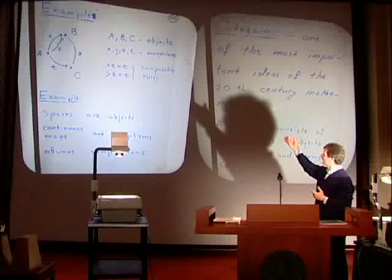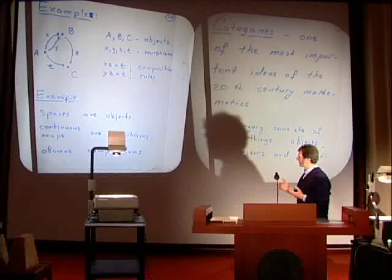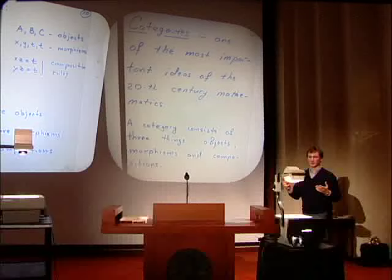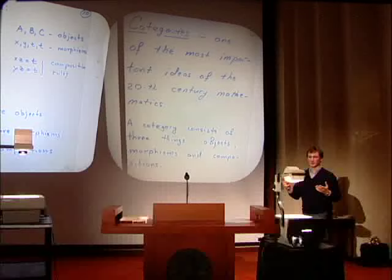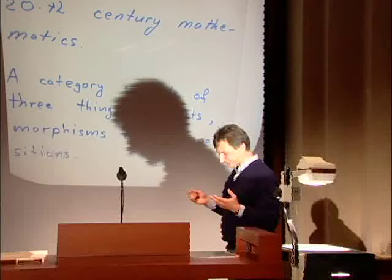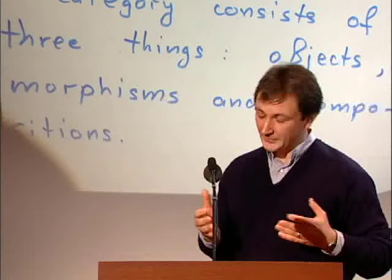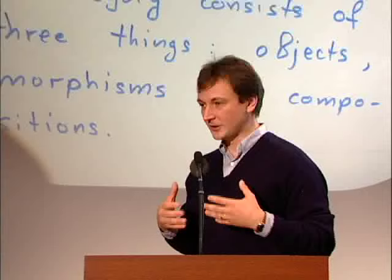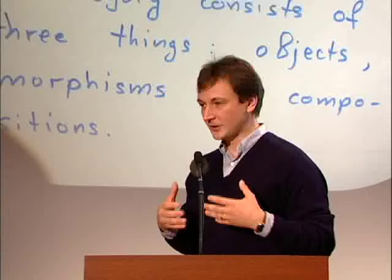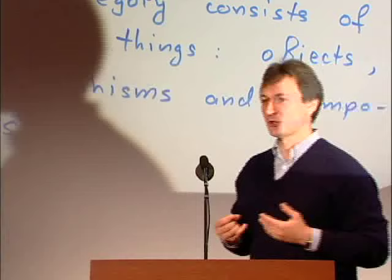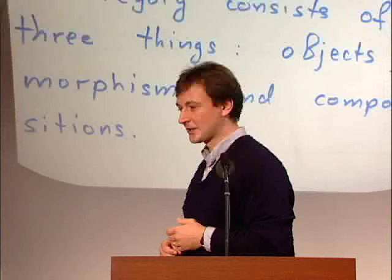This first example is a combinatorial finite category. Here is a second example: objects are all spaces which exist, and morphisms between two spaces are continuous maps between them. Continuous maps can be composed, giving an example of a category of a very different kind. What was somewhat amazing is that for very many classes of mathematical objects, there are natural categories which correspond to them — whose objects are these objects, morphisms are natural ways of connecting one object to another, and there is some kind of composition.